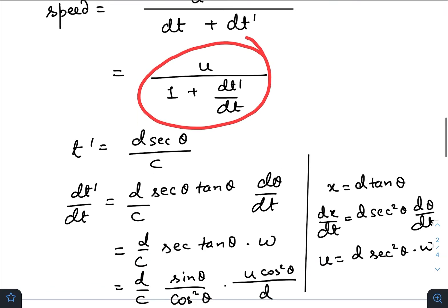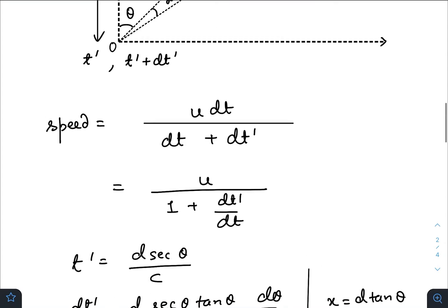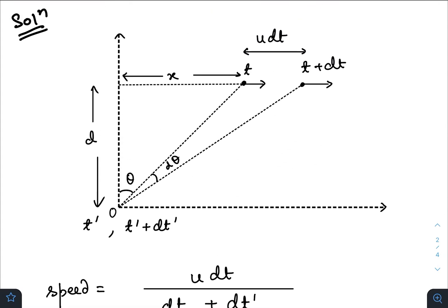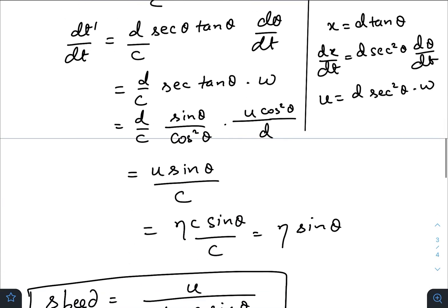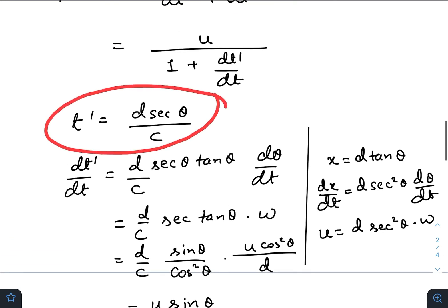Now, dt prime is the time recorded by the observer O. The time taken by the information to travel from this point to this point would be d sec θ divided by c, since information travels with the speed of light. Differentiating with respect to t, we get this expression.